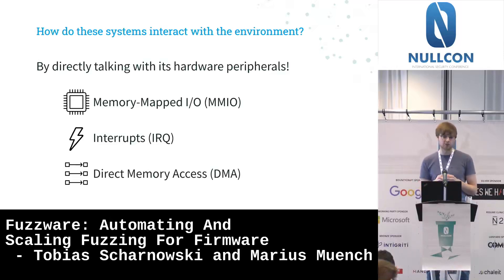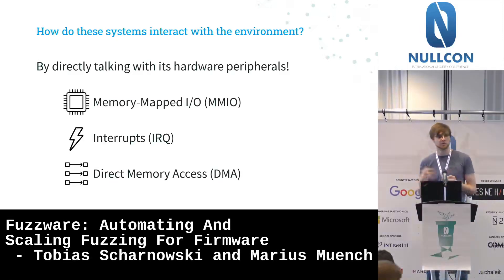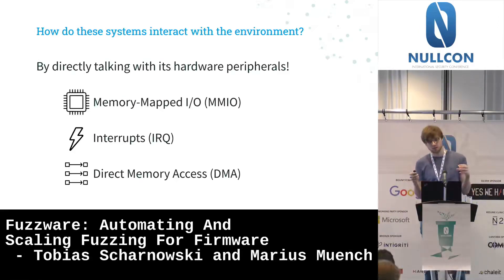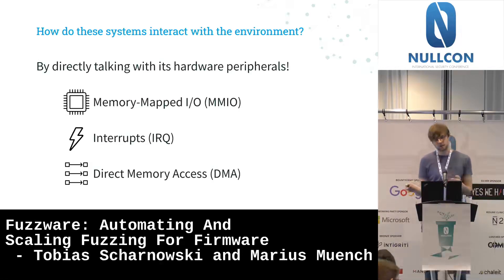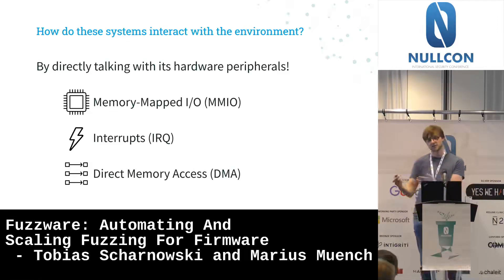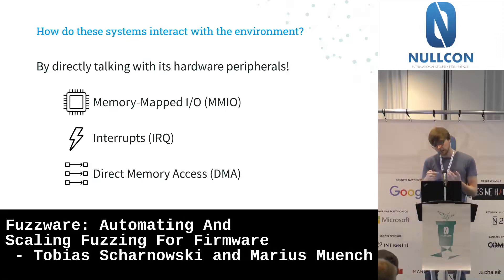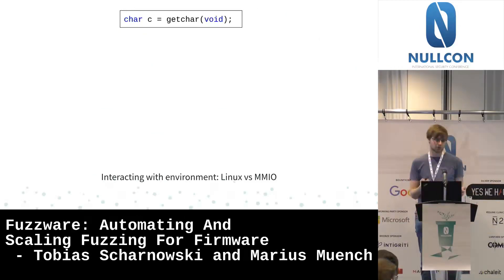The third mechanism is Direct Memory Access, or DMA, used for high-throughput scenarios like Ethernet or USB. The firmware and hardware agree on a shared memory region they can both read and write simultaneously. For example, if a device wants to send an Ethernet frame, it writes into an Ethernet frame buffer and then fires an interrupt — so the firmware knows it can access this directly without having to read every byte via MMIO one after the other.